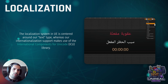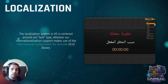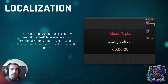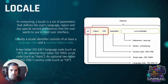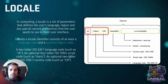In Unreal Engine, the localization system is centered around the International Components for Unicode library. This library is in charge of knowing what language we are in, what culture we are using, what locale we are using, and giving us the tools to translate our game easily. A locale is a set of parameters that will define the user's language, region, and any special variants the user requires on their interface.